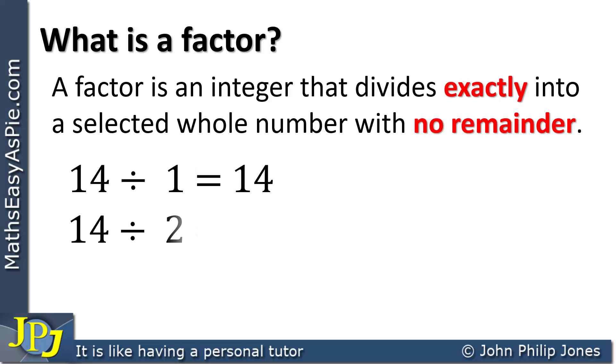I'm now dividing 14 by 2, and that goes exactly with no remainder. So 2 is a factor of 14. We then take the 14 and divide by 3. Now this goes 4 times with a remainder of 2. So it does not go exactly and it does have a remainder. Consequently, 3 is not a factor. Carrying on,